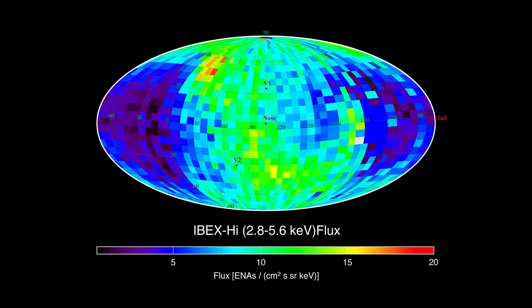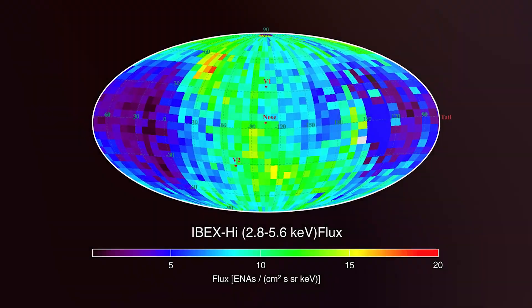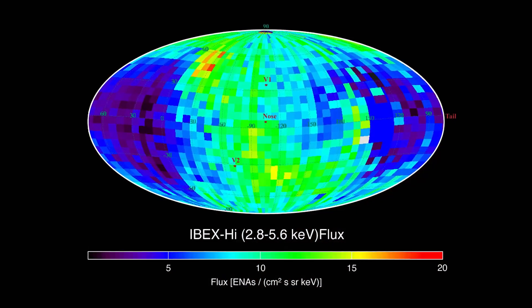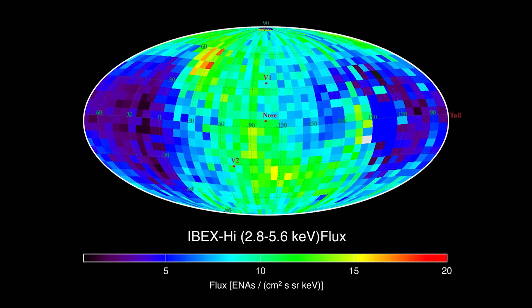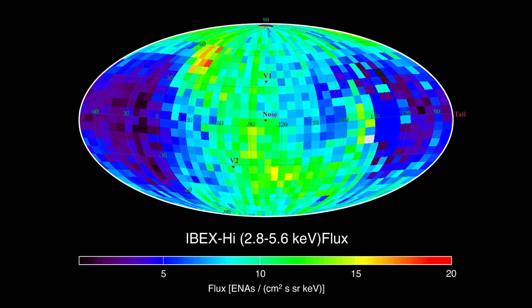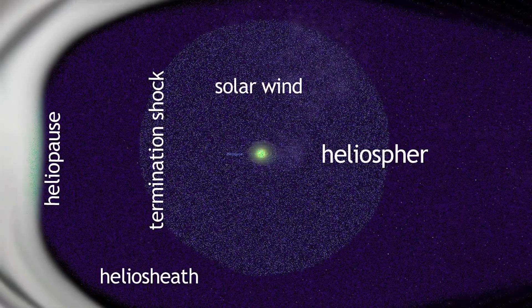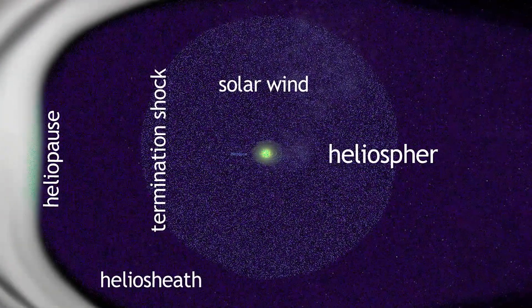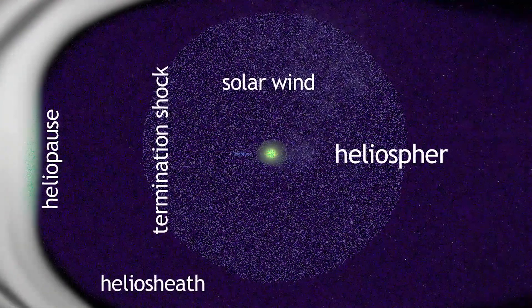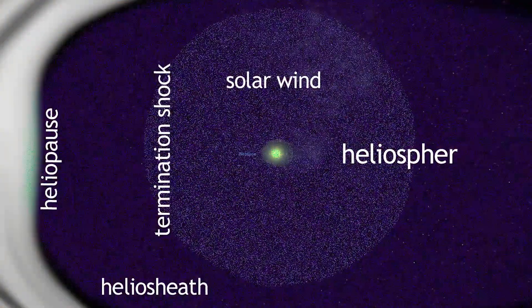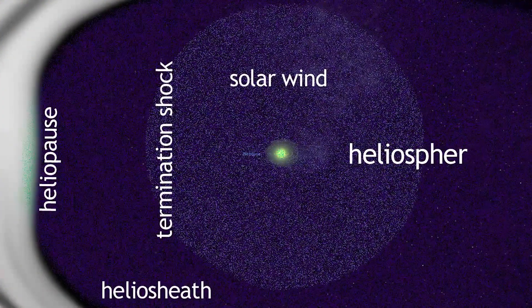IBEX ribbon is a band of intense energetic neutral atoms that extends along the heliosphere and is notably brighter than the neighboring atoms, presenting a contrast. Nonetheless, no one has yet provided a satisfactory explanation for the occurrence of the IBEX ribbon or its implications for current heliopause models.